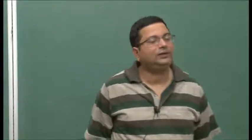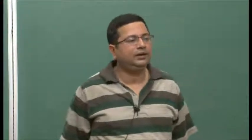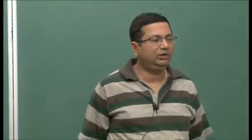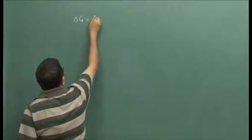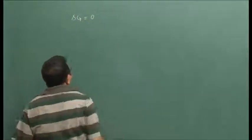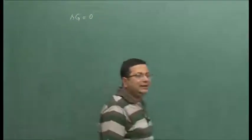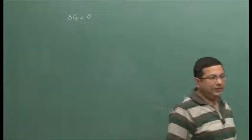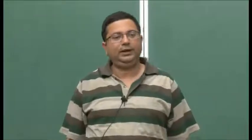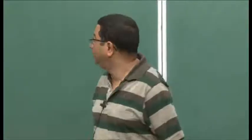Good evening. In the last class we started discussing chemical equilibrium and we have shown that at equilibrium delta G is equal to 0, which is the change in Gibbs free energy is 0 for a chemical equilibrium process.